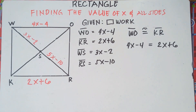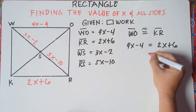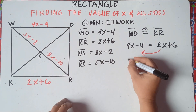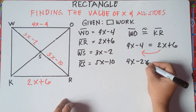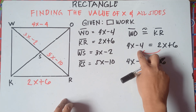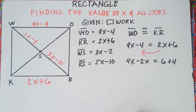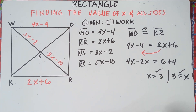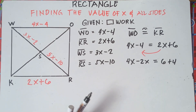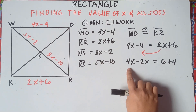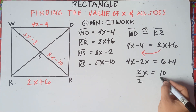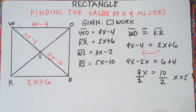We write the equation: 4x minus 4 is equivalent to 2x plus 6. To get the value of x, transpose 2x from right to left — change the sign, it becomes negative 2x. Then transpose negative 4 from left to right, it becomes positive 4. So 4x minus 2x equals 6 plus 4: that's 2x equals 10. Divide both sides by 2, and x equals 5.